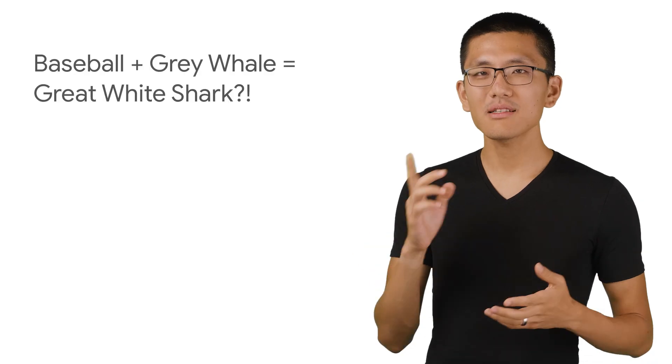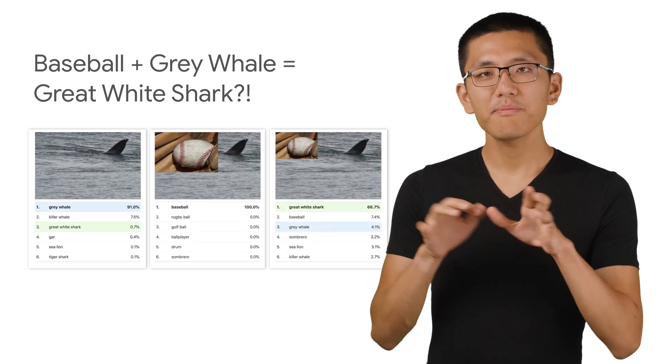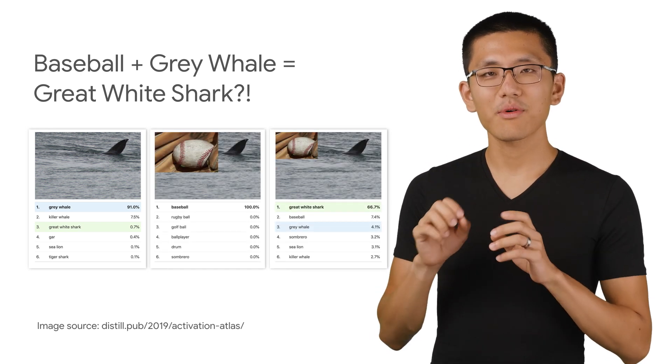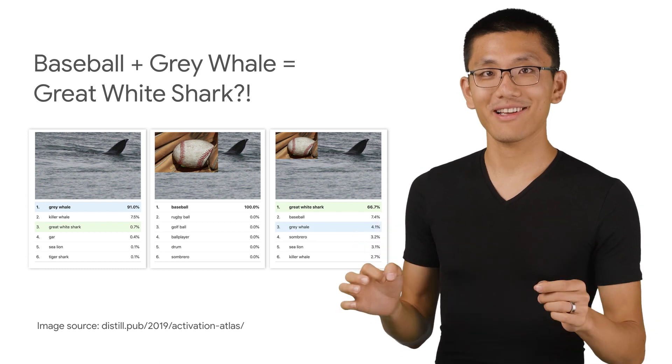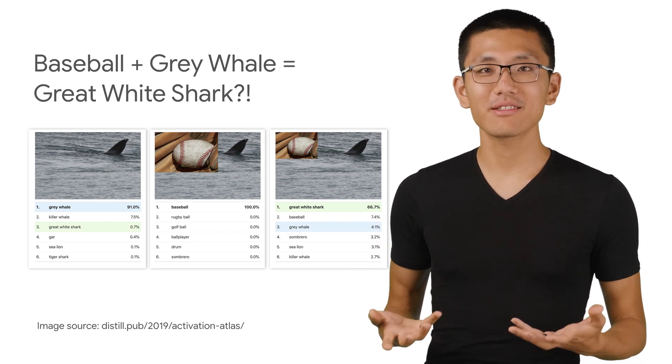At first, it doesn't quite work. But with a bit of fiddling around with the image size, we can get the network to output great white shark as its top prediction for the image.